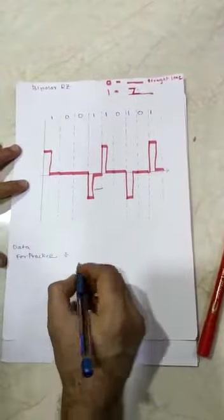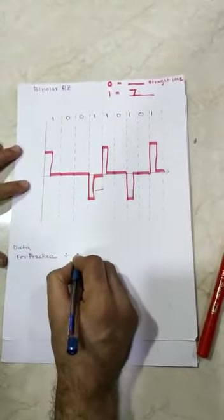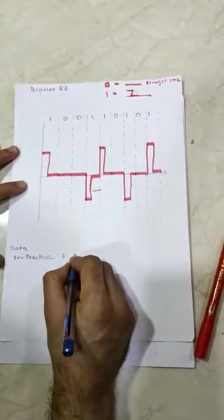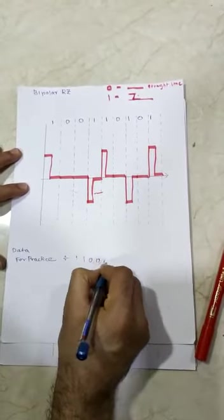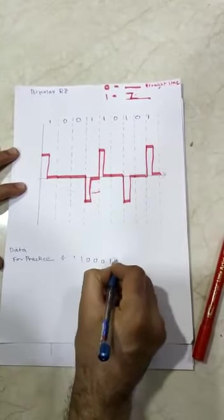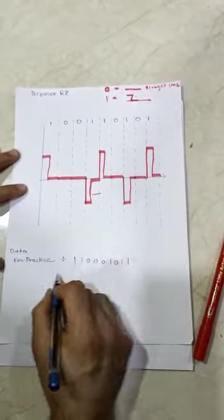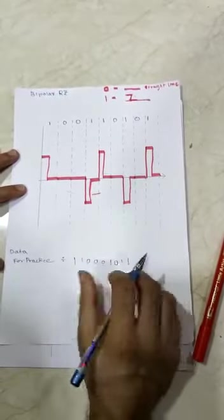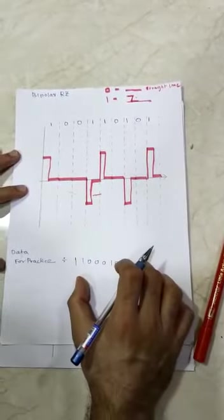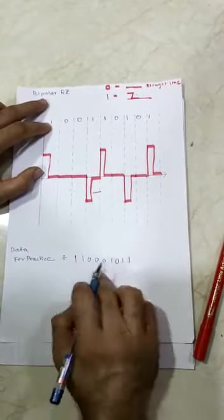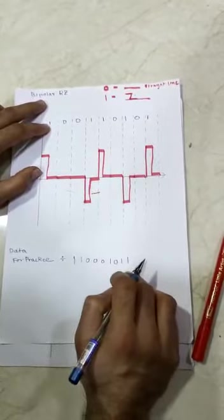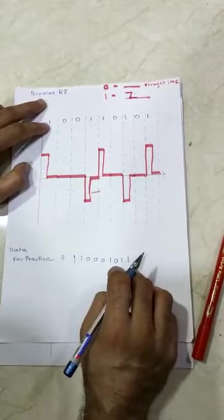I will give you one more example so you can practice at home. The practice digital bits are: 1 1 0 0 0 1 0 1 1. You have to draw the waveform for Bipolar RZ using these particular bits. I hope you understand.